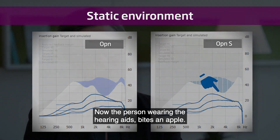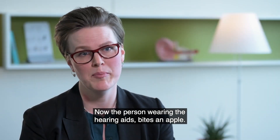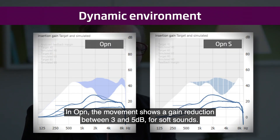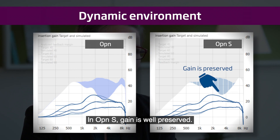Now the person wearing the hearing aids bites an apple. In Open, the movement shows a gain reduction of between 3 and 5 dB for soft sounds. In OpenS, gain is well preserved.